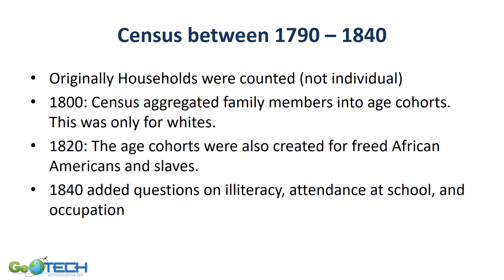For example, they started to add questions about age cohorts — age groupings such as which age group you fall in: ages 5 to 10, 11 to 15, 16 to 20, and so on.